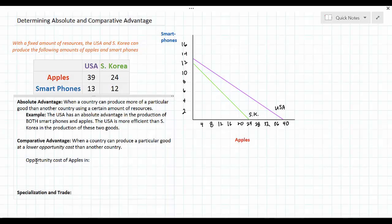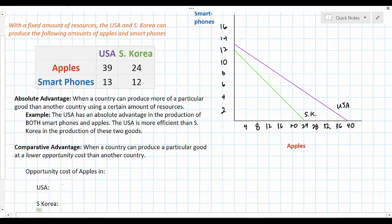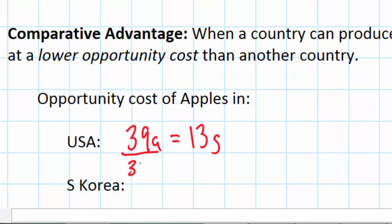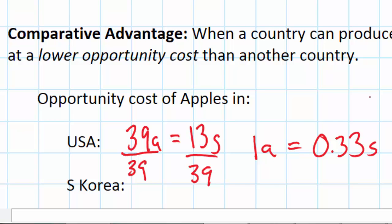In the United States, if all resources are allocated towards apple production then 13 smartphones are being given up. In other words, 39 apples cost the United States 13 smartphones: 39a = 13s. To find the opportunity cost of one apple, divide both sides by 39, and we get that one apple costs the US one third of a smartphone — 0.33s. For every one apple the US chooses to produce, it gives up one third of a smartphone.